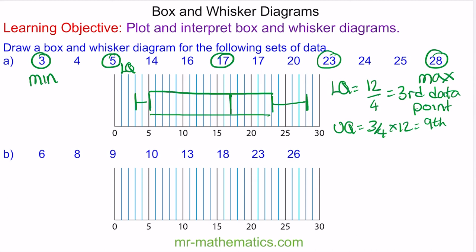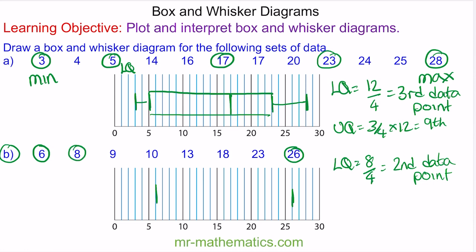Do you want to try and create a box and whisker diagram from the data in question B? You can pause the video and resume it when you're ready. The minimum is 6, the maximum is 26. The lower quartile is the sample of 8 divided by 4, so our second data point, which is 8. The upper quartile will be the sixth data point, so 18. We'll create our box and whiskers, and the median will be halfway, so our fourth data point of 10.